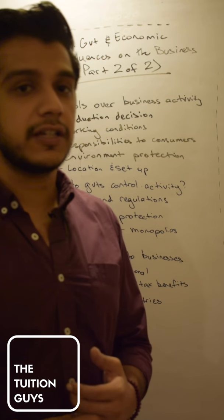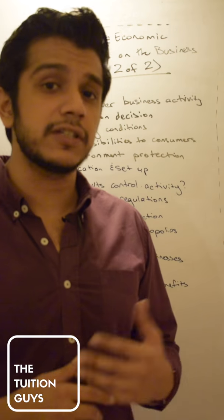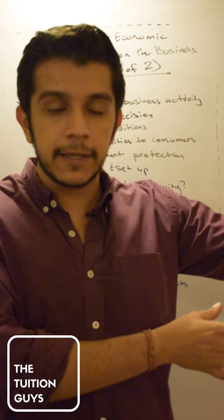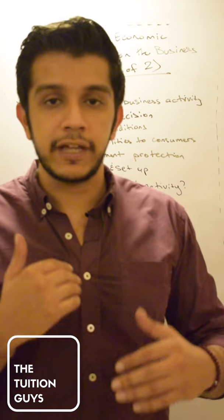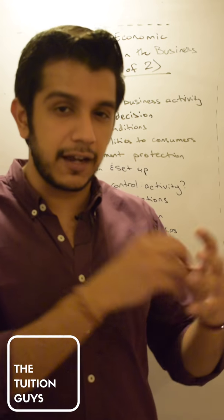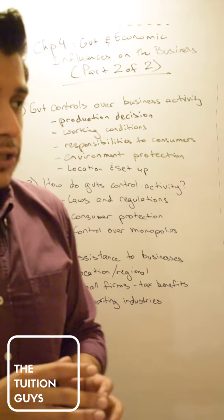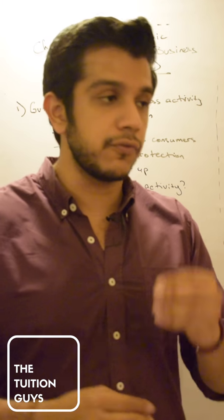And the final thing that they try to influence is the location and the setup of the business. Not all businesses can be located in one area. Therefore, the government actually tries to create zones and regions and make sure that businesses aren't cluttered into a certain area and certain types of businesses which make an industry are definitely not in the center of the city or near office buildings and so on so forth.